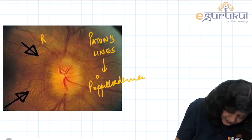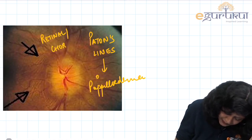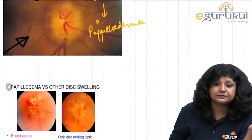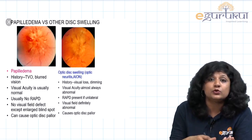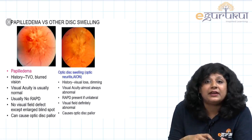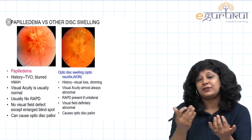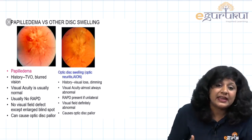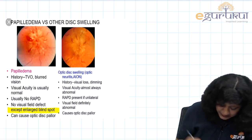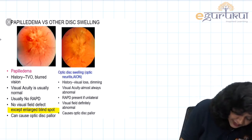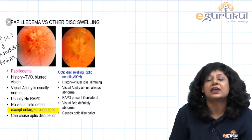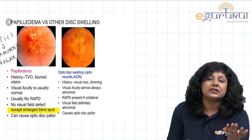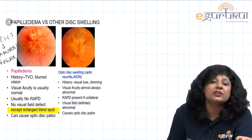Key differences between papilledema and optic neuritis: papilledema is bilateral, causes enlargement of the blind spot, no color vision defects, and features of raised ICP (projectile vomiting, headache, amaurosis fugax). Optic neuritis shows no features of raised ICP. Treatment for papilledema is to treat the cause, while optic neuritis is treated with methylprednisolone.